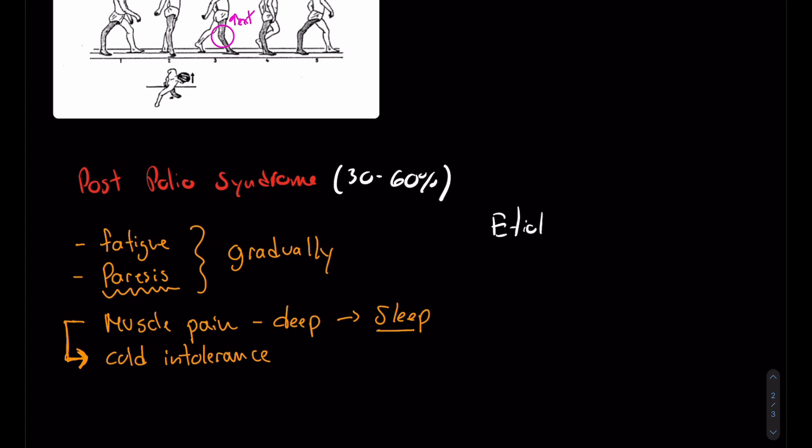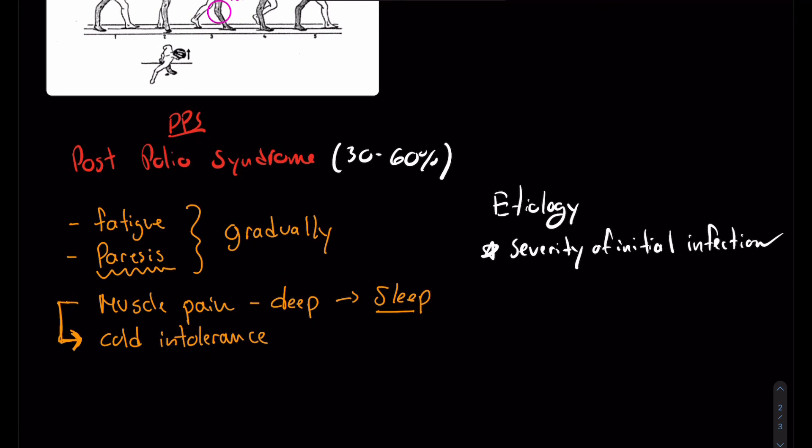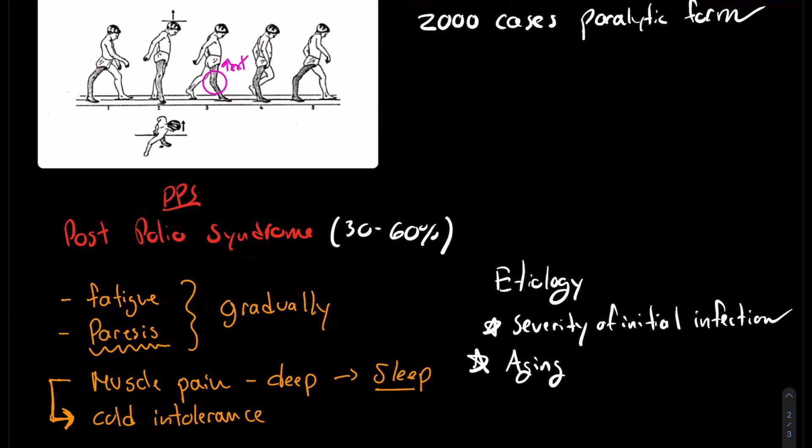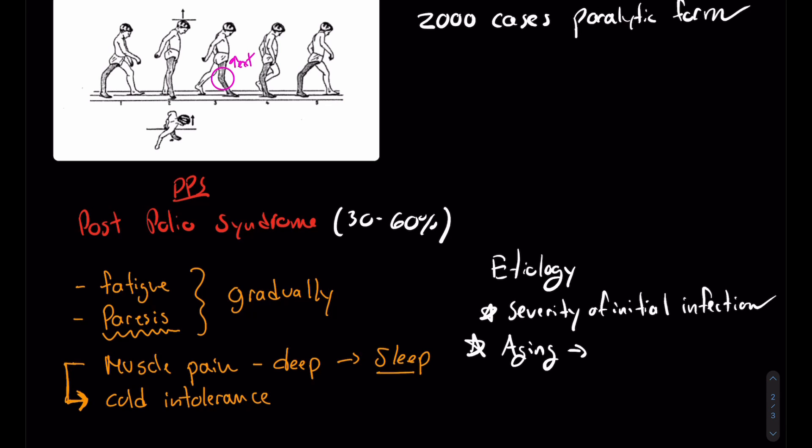One predictive factor is the severity of the initial infection. Usually, the people that we see in clinic are going to be people that, as children, they have a very severe form of paralytic poliomyelitis. Another one would be just aging, in general. Once you lose your motor neurons, they don't come back. You're basically functioning on the neurons that you have left to compensate for the loss of muscle function. What happens is, with aging, we naturally tend to lose neurons, motor neurons. We can lose up to 50% of neurons by the age of 60.